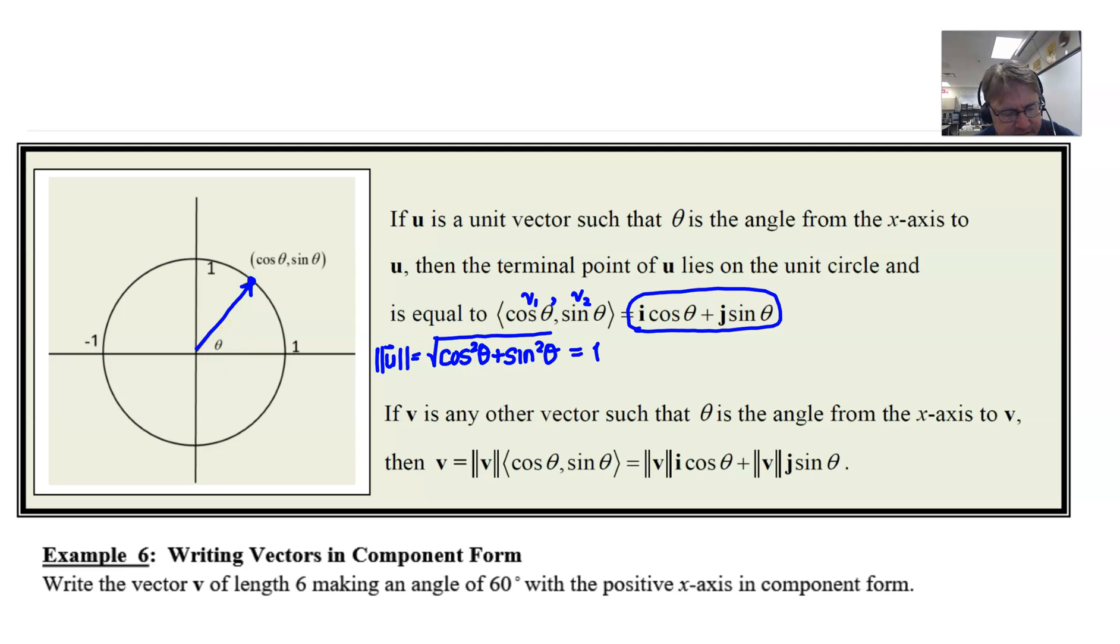So if V happens to be any other vector that still has that same angle, let's say that vector V is this particular guy. Maybe it's this red vector here. Well, we can very easily still refer back to our blue unit vector by just simply taking whatever the magnitude of V is and multiplying it by that unit vector.